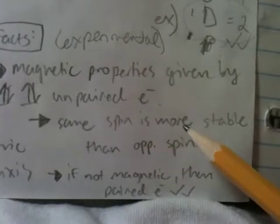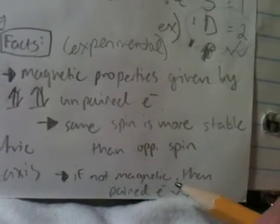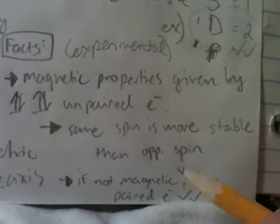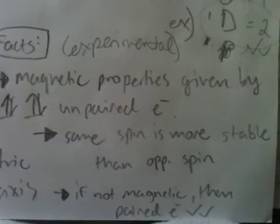Furthermore, the same spin is more stable than opposite spin. So, that refers to the spin of the electron.